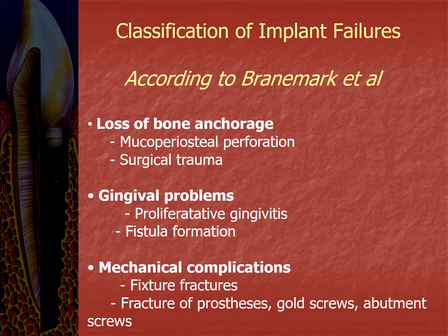The classification of implant failures. As per Brenner-Marx et al., the reasons for implant failure are loss of bone anchorage, gingival problems, and mechanical complications. Loss of bone anchorage is due to mucoperiosteal perforation or surgical trauma; gingival problems include proliferative gingivitis and fistula formation; and mechanical complications include implant fracture, fracture of the prosthesis, gold screws, abutment screws, etc.